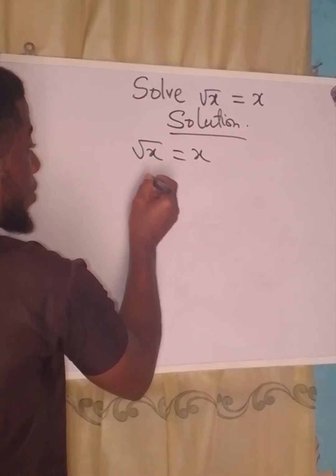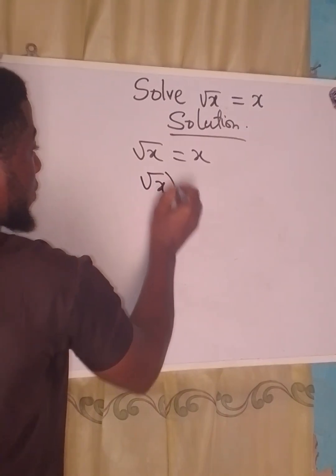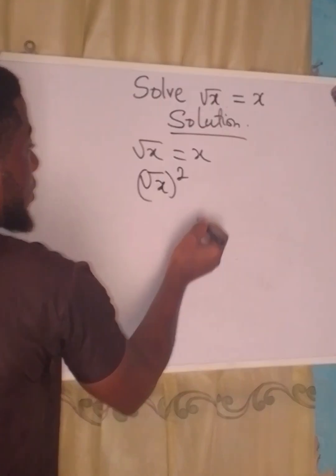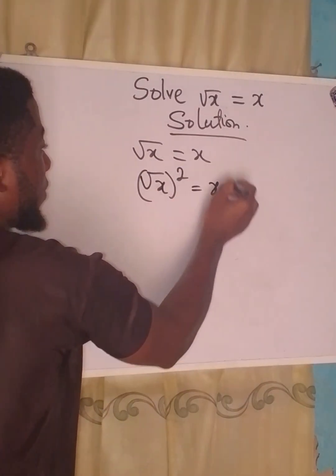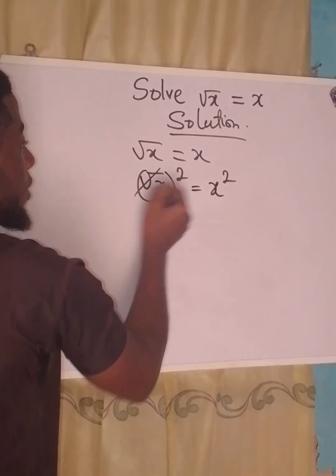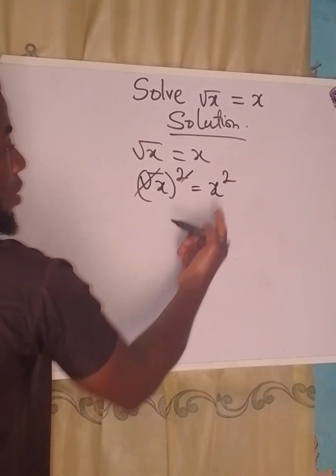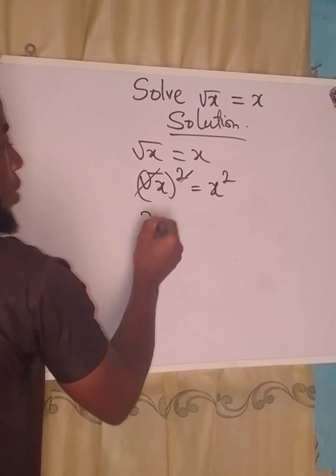So we will do that by squaring both sides. We'll square this and on the other side we'll have x squared. This is going to go with this one. Now I can write this one first, so we have x squared and it will be equal to x over here.